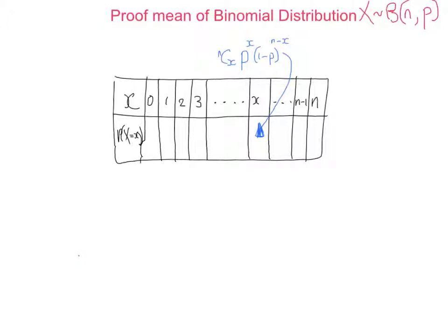To calculate the mean, we do the same as for discrete random variables from S1: we multiply each outcome by its probability and sum across all terms. We're going to prove that the mean of the binomial distribution is n times p.